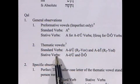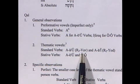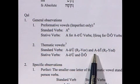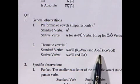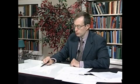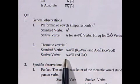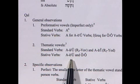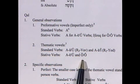For thematic vowels in the standard verb, you have the possibility of A, long A, or long U for an original R2 Vav, or long A / short A / long A then hireq-yod for an original R2 Yod. For stative verbs, you either have long A and long E with shureq or U for the imperfect and imperatives, or holem-vavs for the stative forms.